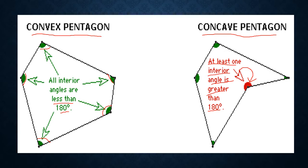Now let us know about convex and concave polygon formally. In a polygon, if all the interior angles are less than 180 degrees, then it is called a convex polygon. If at least one interior angle is greater than 180 degrees, then it is considered a concave polygon. Let us explore about these in detail.